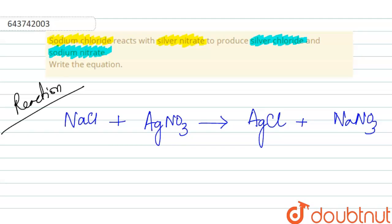We have one sodium on both side, one Cl on both side, one Ag on both side, and one NO3 on both side. So this kind of a reaction is basically known as double displacement reaction.